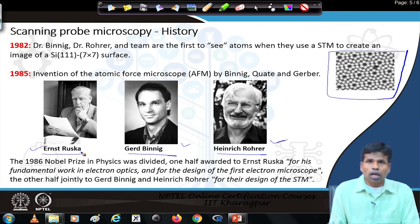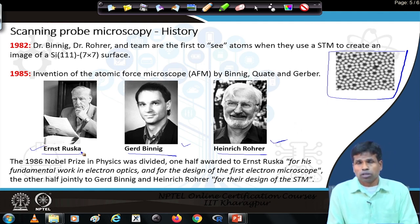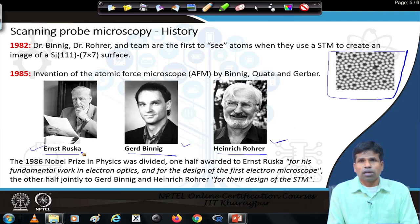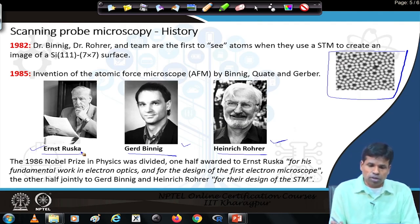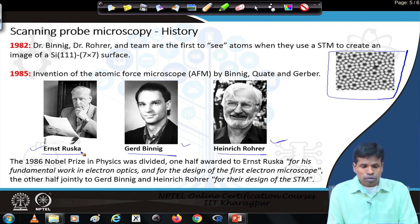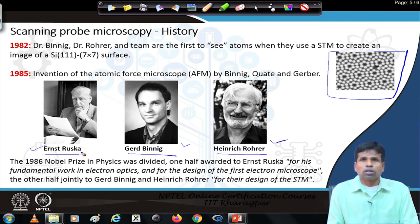Ernest Ruska and Erwin Muller both worked at the Technical University of Berlin — one on electron microscopy, the other on electron emission and field ion microscopy. Muller's work later became the main topic of his research, and he presented atomic-level resolution of metal samples using the field ion microscope.